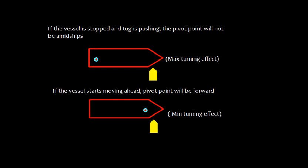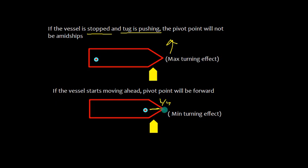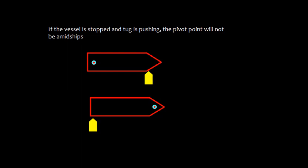Let us have the application of this shifting nature of pivot point. If the vessel is stopped and a tug is pushing, the pivot point will not be at amidships and there will be maximum turning effect. However, if the vessel starts moving ahead, the pivot point is at L by 4 from forward and the tug pushing the bow will have minimum turning effect. That is why it is important to know the shifting nature of pivot point.